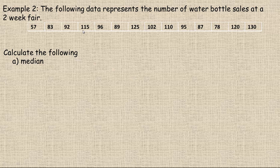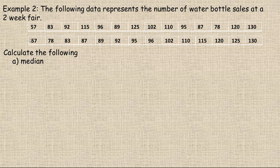In example two, we're given the following data set which represents the number of water bottle sales at a two-week fair. So there's 14, two weeks is 14 days, 14 numbers here altogether. Now, in order to use that formula, we need the numbers in order. It's best to actually put them in order, and then that process is a lot quicker.